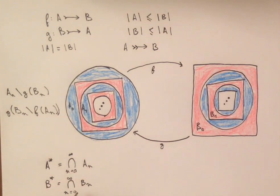And so what this intersection as N goes from 0 to infinity means is that a point is going to be in A star if and only if, for every natural number N, that point is in AN.